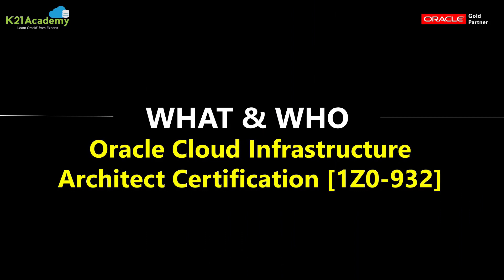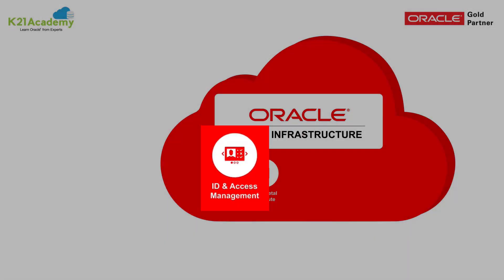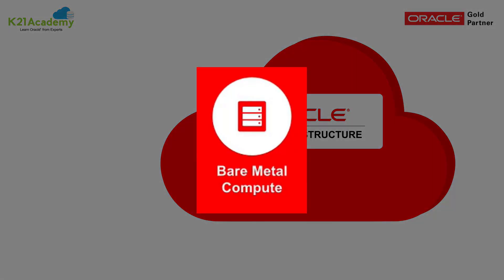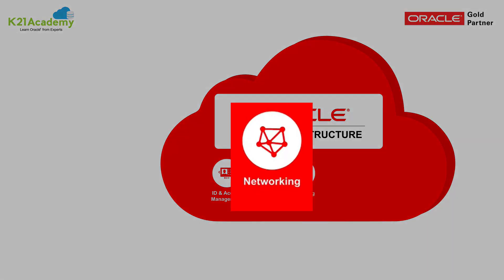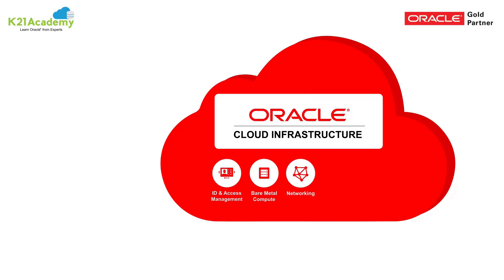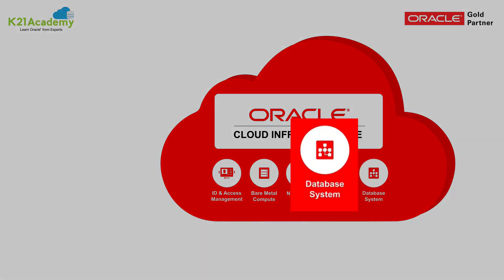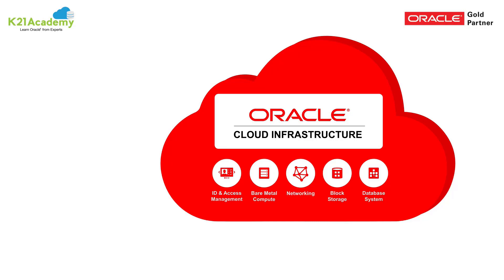Let's begin with what the OCI 1Z0-932 certification is and who this exam is for. This Oracle Cloud Infrastructure Architect Certification is for professionals responsible for designing infrastructure solutions using OCI services like Identity and Access Management, building Linux or Windows machines on bare metal or virtual machines, configuring networks like virtual cloud network, subnets, routing tables, security lists, or integrating with on-premise using VPN Connect or FastConnect, or connecting application tiers with a database tier.